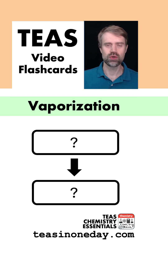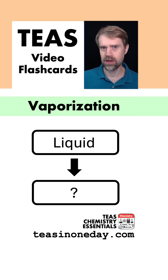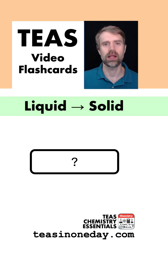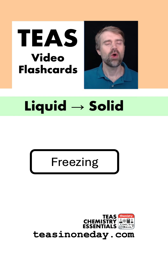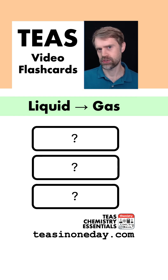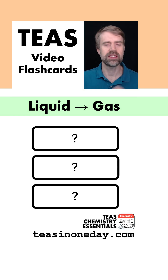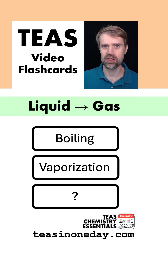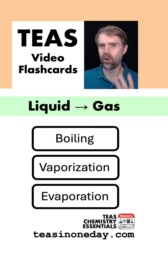Vaporization — what to what? Liquid to gas. What's liquid to solid? We call that freezing. When liquid turns to gas, there are three names that the tests might use for that state change: boiling, vaporization, and evaporation. Know all three.